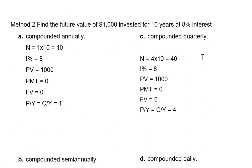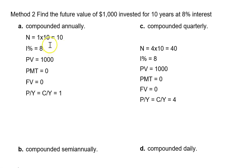So I have shown here if we had annual compoundments our N would be 1 times 10, I% is 8, PV is 1000, PMT and FV are unknown values so we put 0 in to hold those places and the P/Y and C/Y are both 1 for annual compoundments.